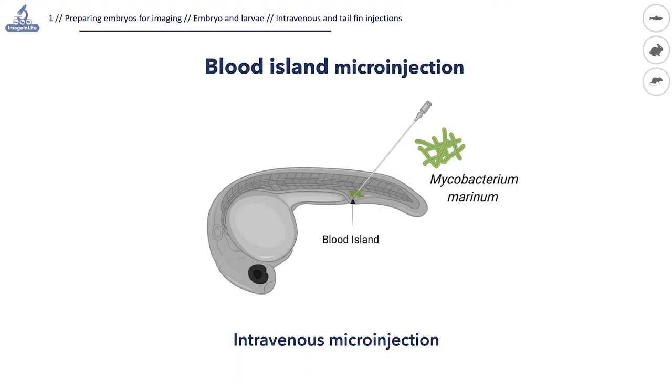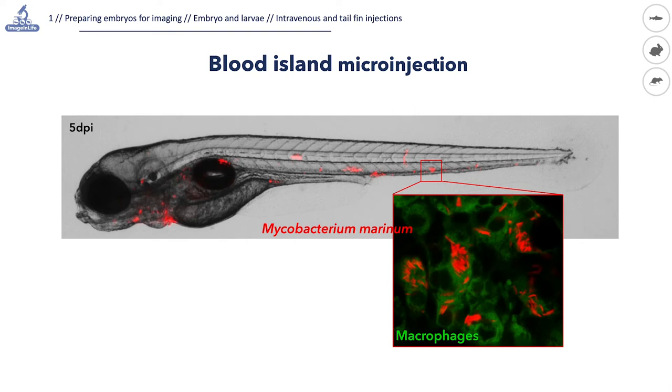In my project, we use the same technique or a similar microinjection method to inject bacterial pathogens into the blood circulation. We infect the embryos with bacteria that resemble the human pathogen that causes tuberculosis. After a few days, the infected larvae develop clusters of bacterial infection, which are early stages of tuberculosis granulomas, typical for this infectious disease. After injection into the blood circulation, the injected cells or bacteria spread through the body.